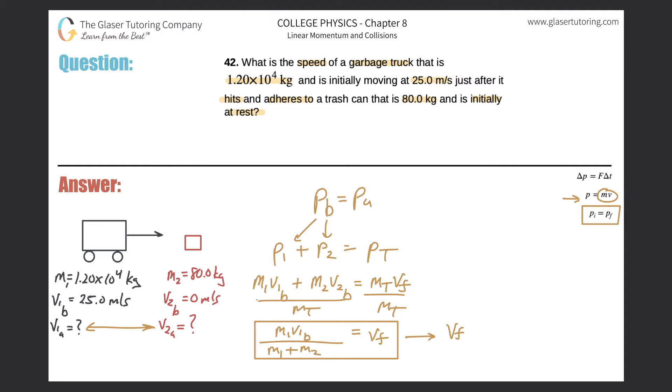So we know that the final velocity will be equal to the mass of the garbage truck which was 1.2 times 10 to the 4, so 1.2 times 10 to the 4 kilograms multiplied by the velocity of that garbage truck which was 25 meters per second, all divided then by the total mass which is the mass of the garbage truck added to then the mass of the trash can which was 80. And now all we need to do is just plug it into that calculator. So let's take out that calculator. So we've got 1.2 times 10 to the 4th times 25 divided by parenthesis now. 1.2 times 10 to the 4th plus 80.